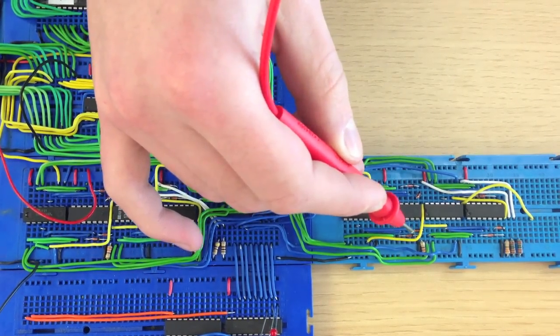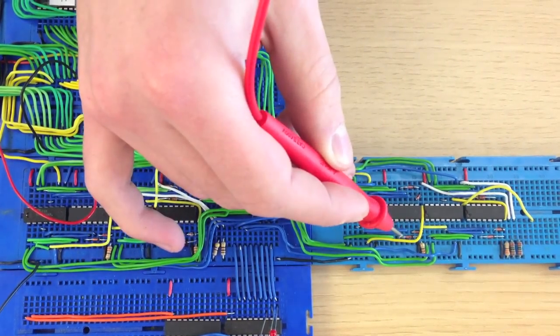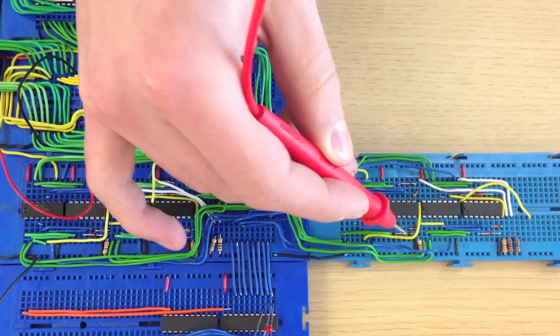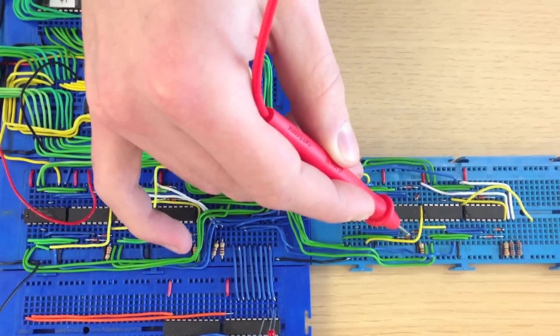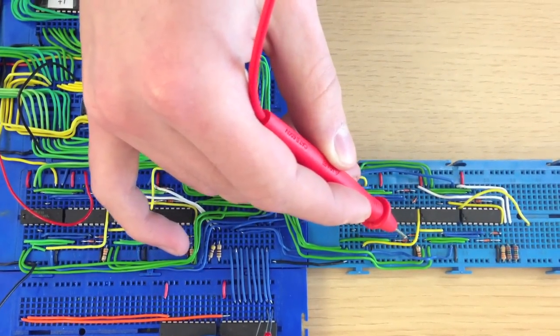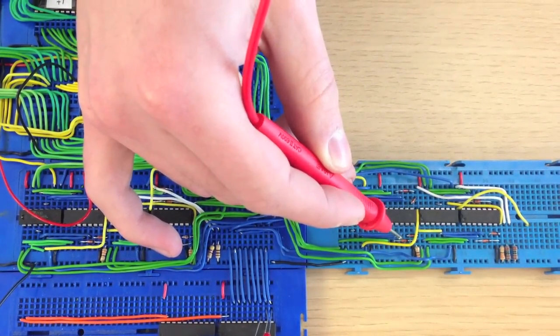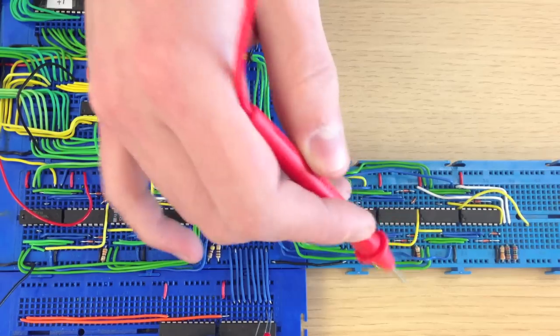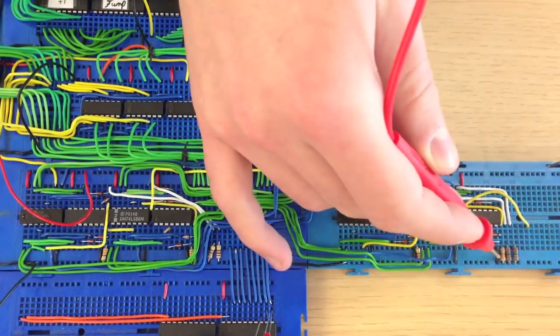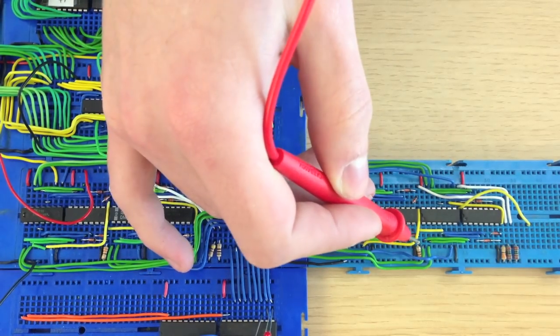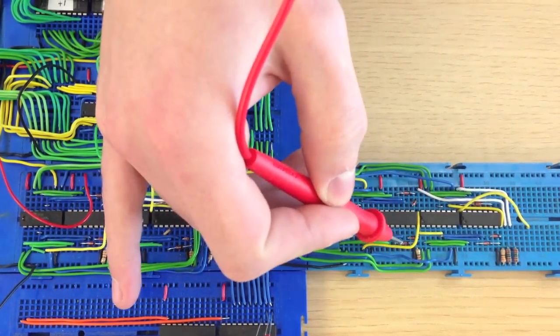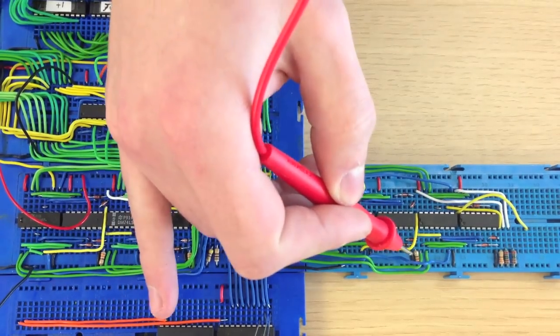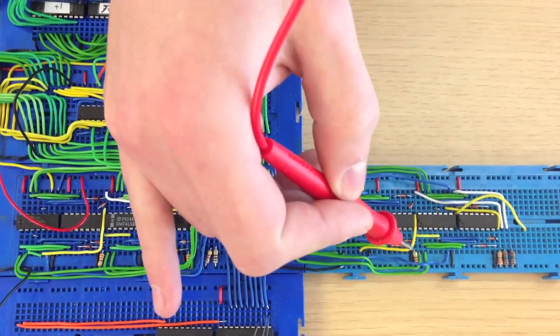These diodes here basically allow us to avoid having another logic gate on the board. They act like an OR gate. This resistor right here and this resistor right here act like pull-down resistors, because we are combining logic circuits with analog circuits, and we need a way to say it is a logic zero.